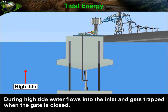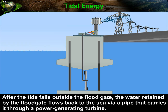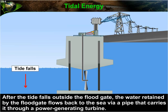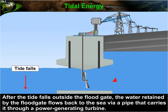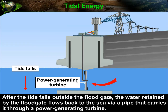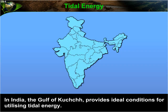After the tide falls outside the floodgate, the water retained by the floodgate flows back to the sea via a pipe, which carries it through a power-generating turbine. In India, the Gulf of Kutch provides ideal conditions for utilizing tidal energy.